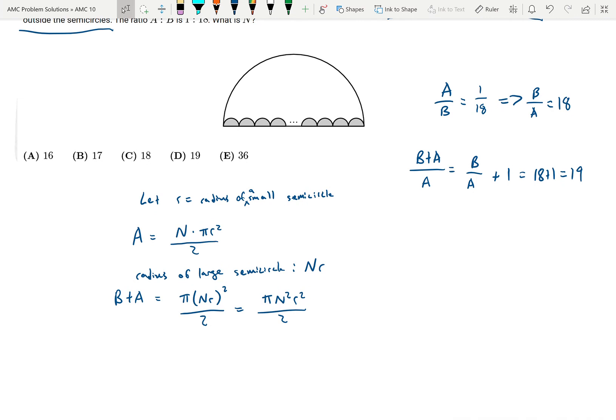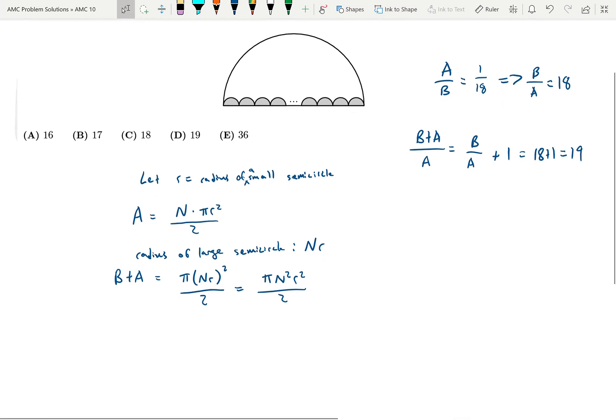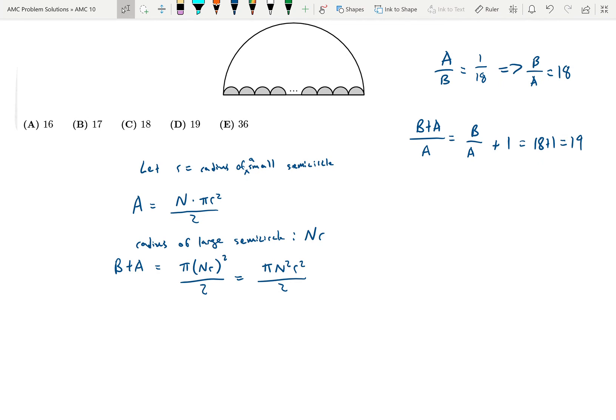So I know that B plus A over A equals 19. Let's find out what B plus A over A is here using the equations I found.